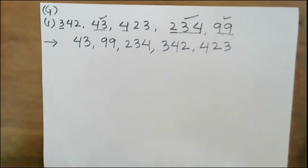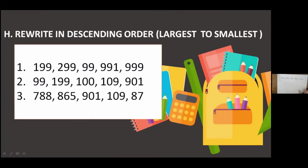This is how you do ascending order. And question H: rewrite in descending order. Descending order means largest to smallest — the largest number comes first and the smallest is last. Question number one: 199, 299, 999, 91, and 999.